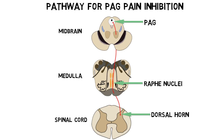Through this pathway, the PAG is thought to be able to inhibit pain naturally, a phenomenon that may occur, for example, in situations of extreme stress, like that experienced by soldiers in battle.